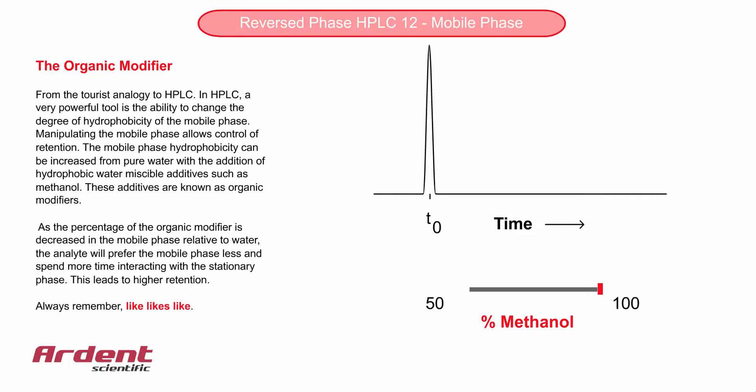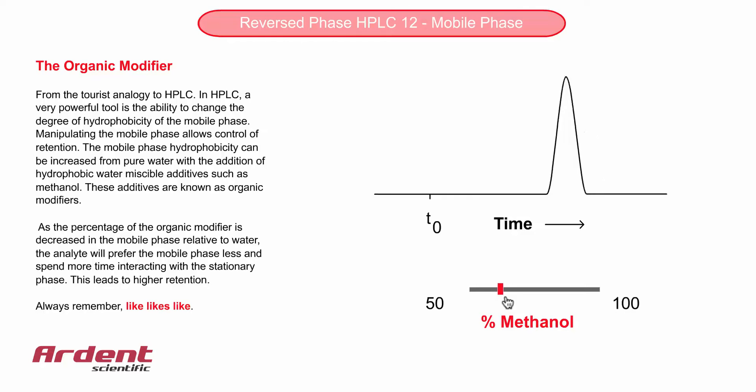Back to HPLC — we're now getting to the heart and power of HPLC, and that is the ability to change the mobile phase. In gas chromatography, the mobile phase plays no part in the separation. In liquid chromatography, the ability to change the mobile phase and thereby change retention, selectivity, and resolution is one of the key reasons why HPLC is by far the most popular technique.